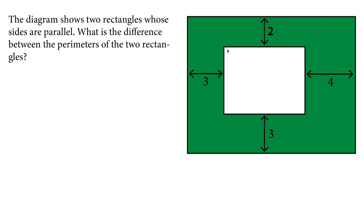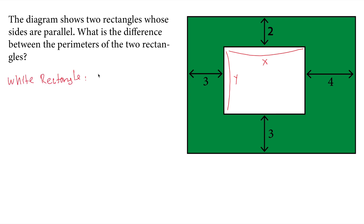I'll call the long side length of the smaller rectangle x and the short side length y. I can write the perimeter of the small white rectangle as 2 times (x plus y).